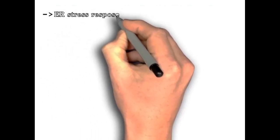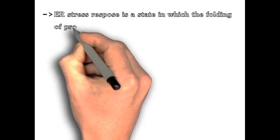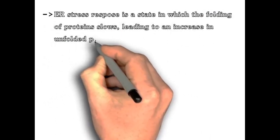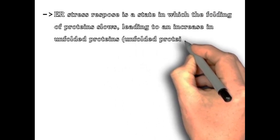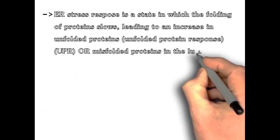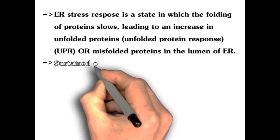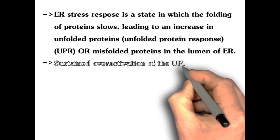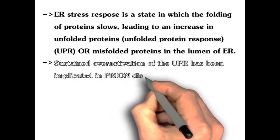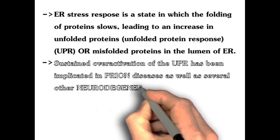ER stress response is a state in which the folding of proteins slows, leading to an increase in unfolded proteins — that is, unfolded protein response — or misfolded proteins increase in the lumen of the endoplasmic reticulum. Sustained overactivation of unfolded protein response has been implicated in primary disease as well as several other neurodegenerative diseases.